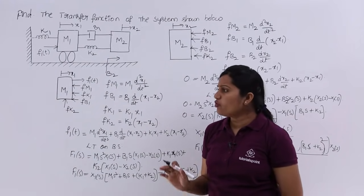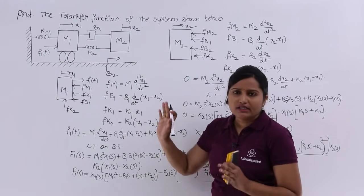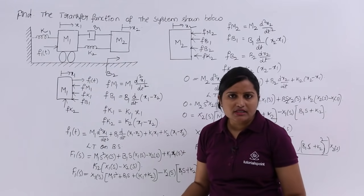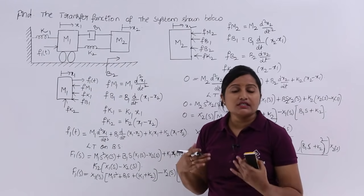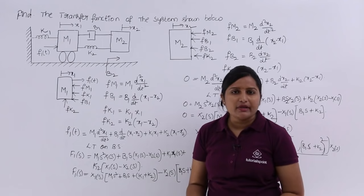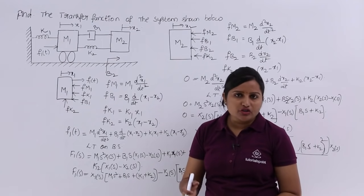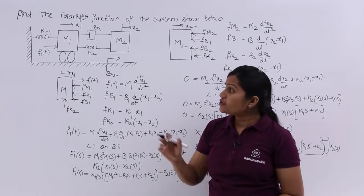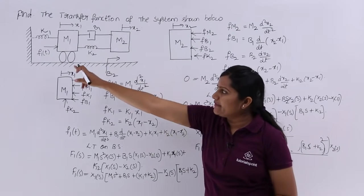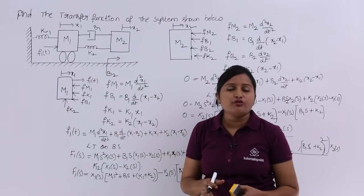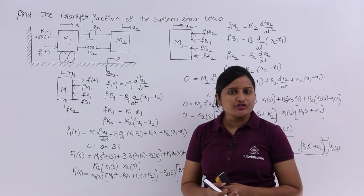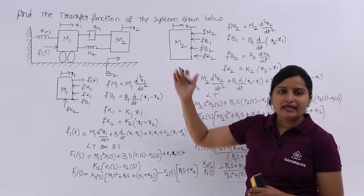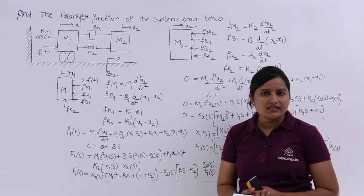This is the transfer function of the given mechanical translational system. The process is: first draw free body diagrams and write force equations for each mass, then take the Laplace transform, and substitute one equation into the other to get the form X2(s)/F1(s). That gives you the transfer function of the mechanical translational system.